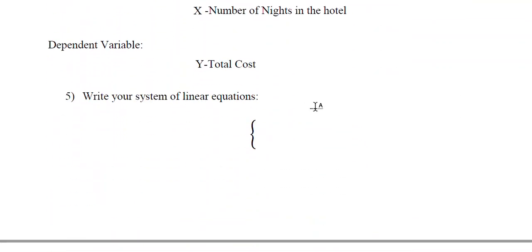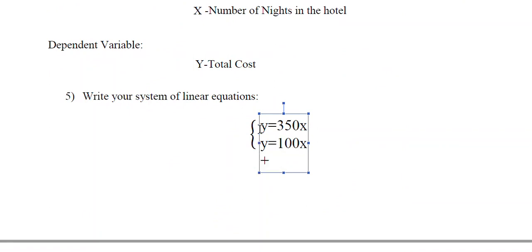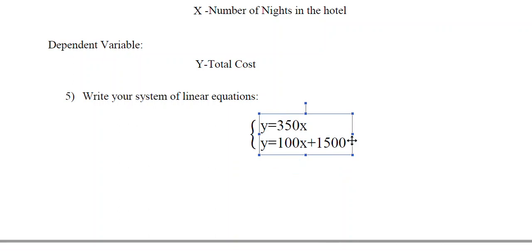Now you have a system of equations. We know that y equals 350x, and we know that y equals 100x plus 1500. You can solve that system algebraically using the substitution method or the combination method that you learned about in this unit.